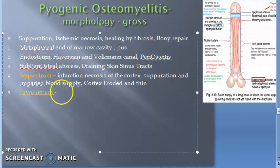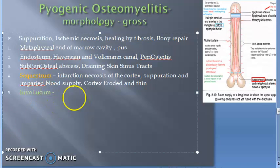Now let us move on to point 0.5 according to the textbook — the formation of Involucrum. What is this Involucrum? It is nothing but newborn bone.